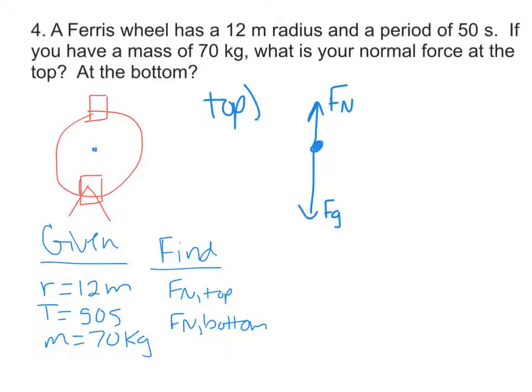Centripetal force never shows up on a force diagram because it's just the net force. But we know that the centripetal force has to be directed downwards. Just like when we were solving net force equations, net force equals top minus bottom. So centripetal force equals top minus bottom, Fn minus Fg. This is starting to come back from when we were doing Newton's Second Law problems.